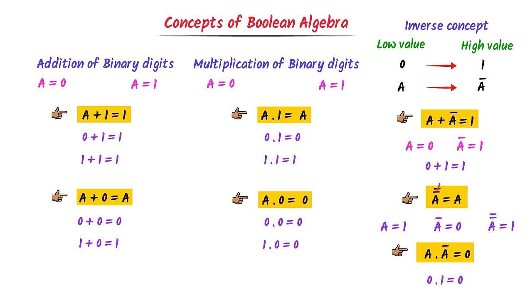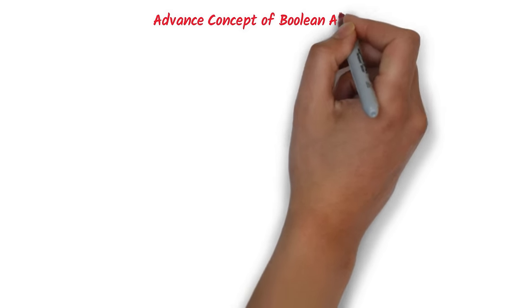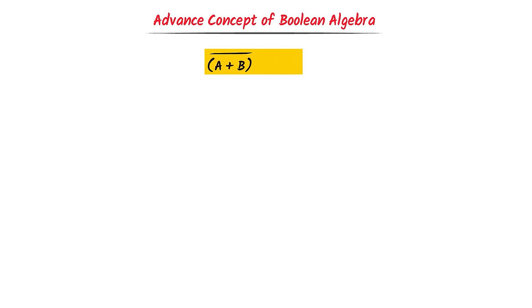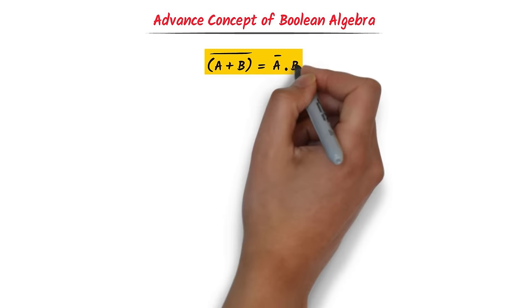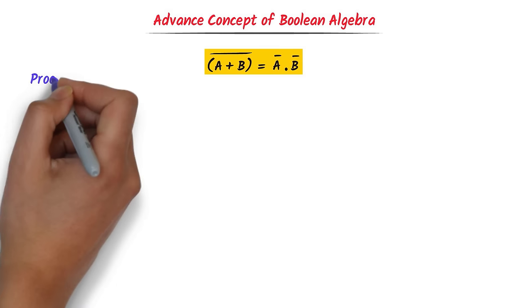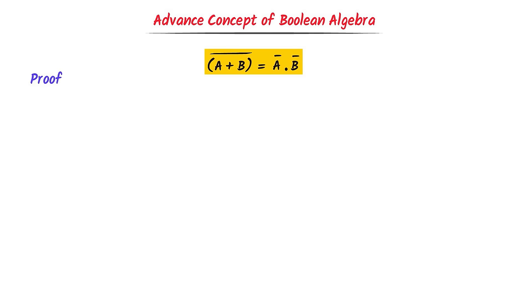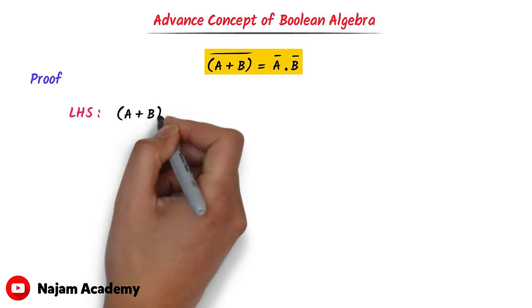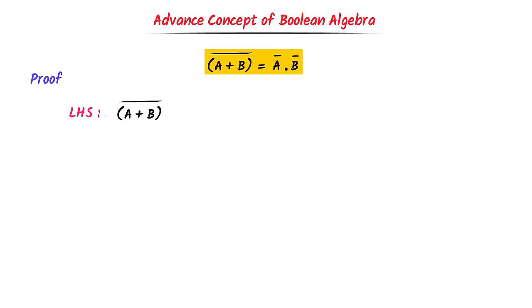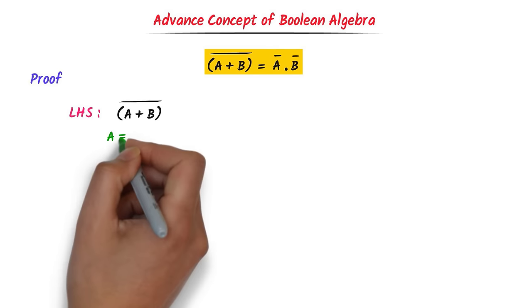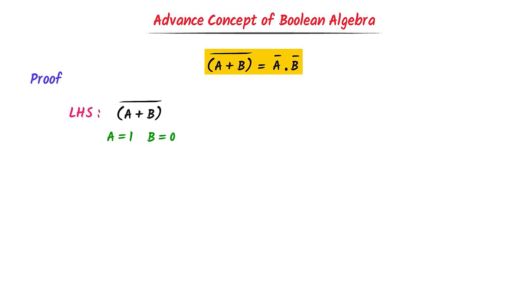Now I will teach you one advanced concept of Boolean algebra: (a plus b) whole bar equals a-bar dot b-bar. Let me teach you its proof. Consider the left-hand side: we have (a plus b) whole bar. Let a equal 1 and b equal 0. I will solve this in two steps — first find a plus b, then find the inverse of a plus b.